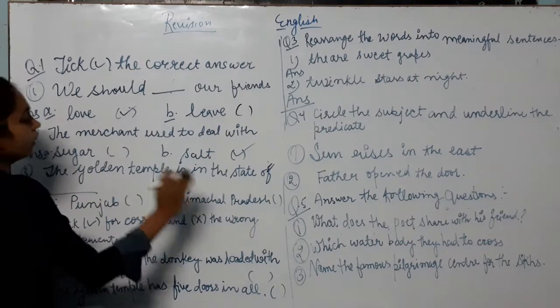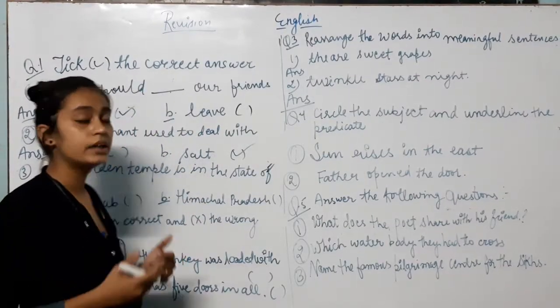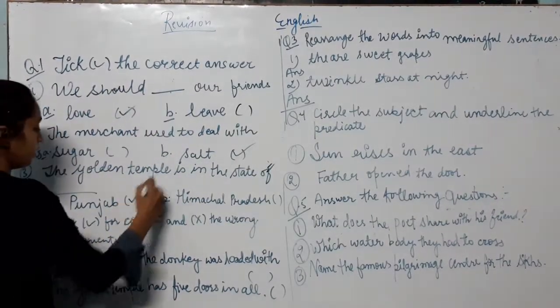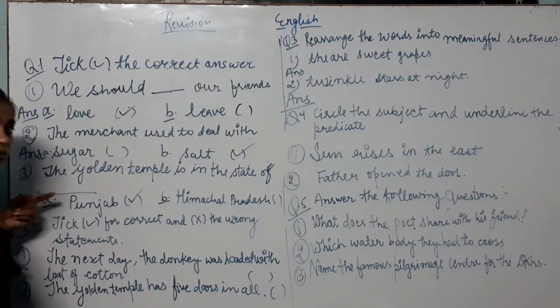Third one is the golden temple in the state of—it is a famous temple Amritsar. Where is Amritsar? It is in the state of Punjab. So the golden temple is in the state of Punjab.